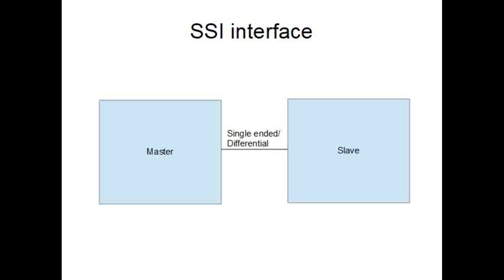When it comes to SSI interface, SSI stands for Synchronous Serial Interface. In SSI interface we have a master as well as a slave, but this is actually a differential interface. One difference compared to SPI is that the master generates the clock, but data can be sent by the slave once the clock is available, so there is no need for the master to ask for any queries — the slave can generate data. This is a differential interface but can be single-ended as well.